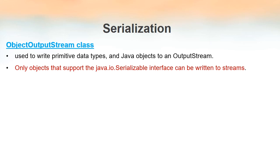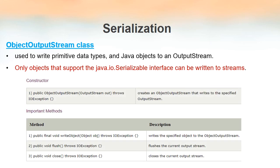Now we will see some of the most commonly used constructors and methods inside the ObjectOutputStream class. One of the constructors is public ObjectOutputStream with one parameter of class OutputStream, which throws an IOException. We have not studied about exceptions so far, so don't focus on that. This is one of the most commonly used constructors of this class. As we all know, constructors are used to create objects, so whenever we want to create objects of this class we can make use of this constructor.